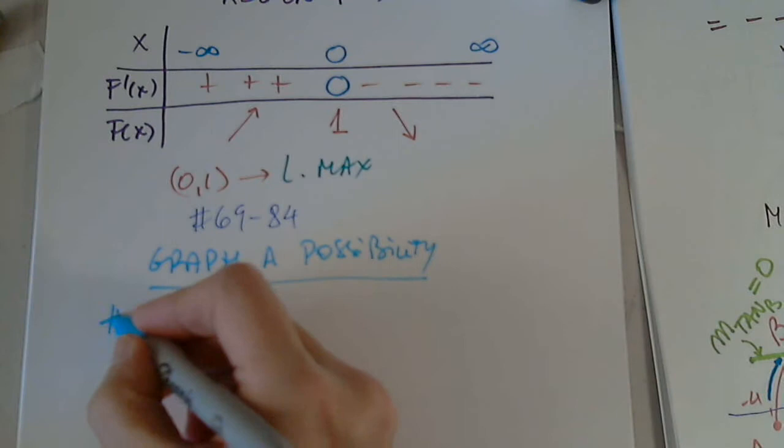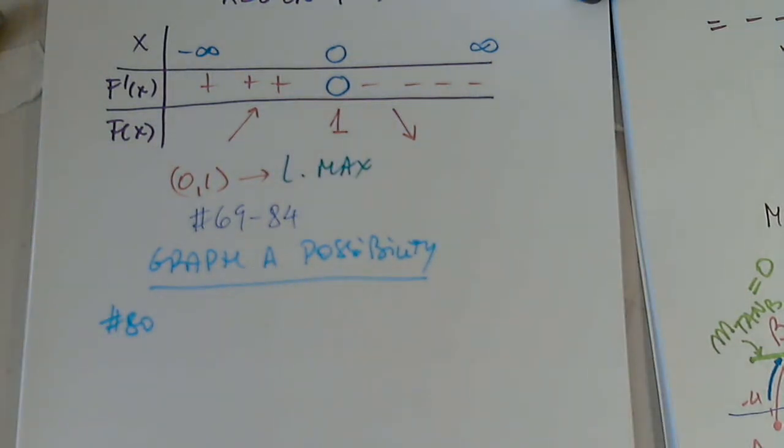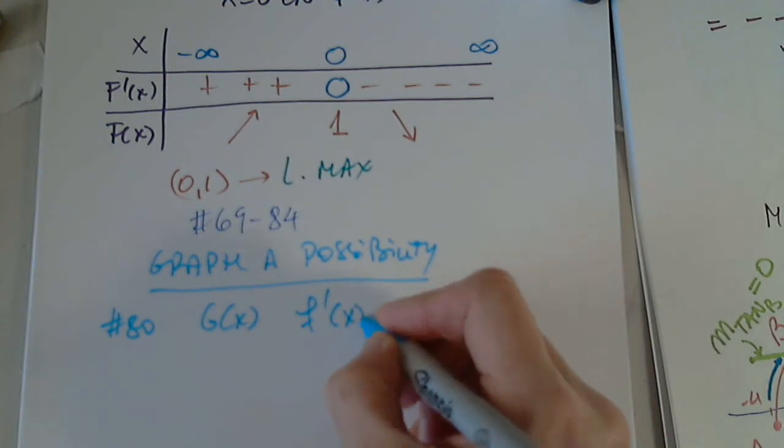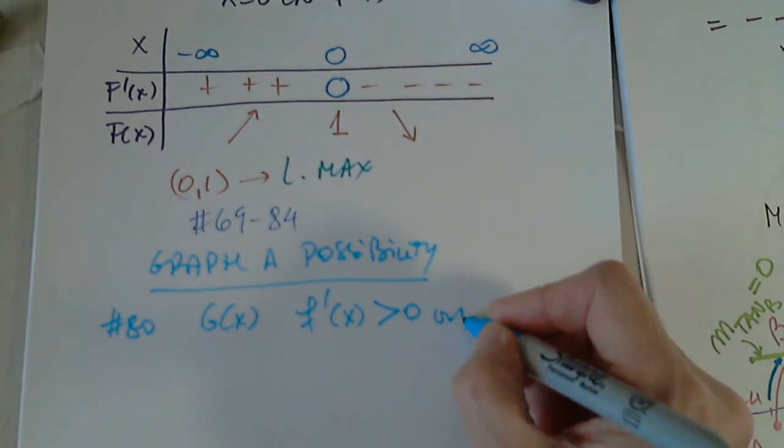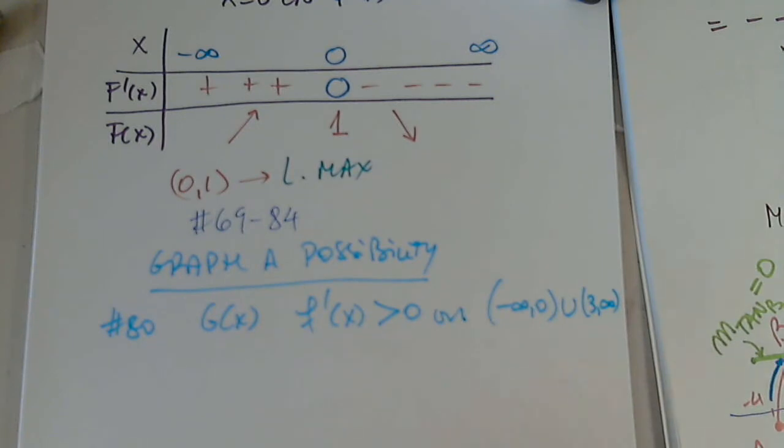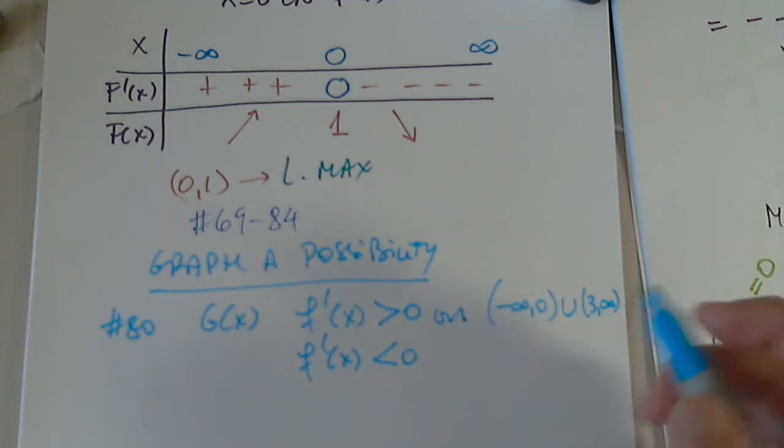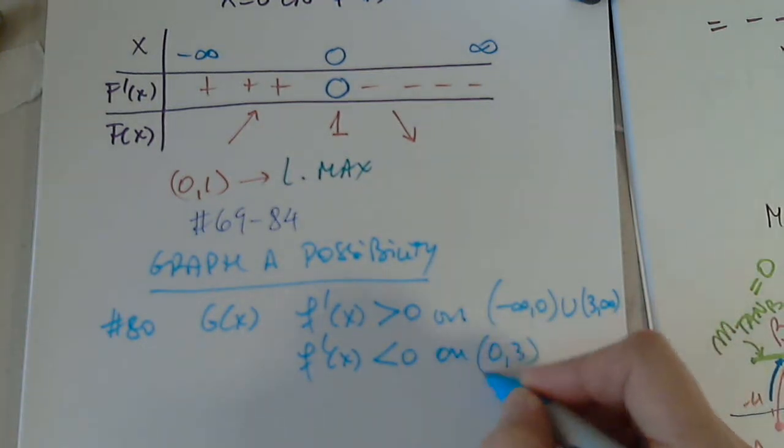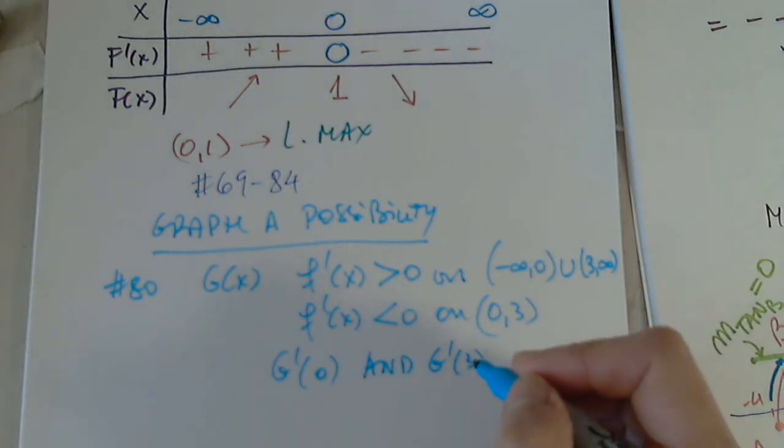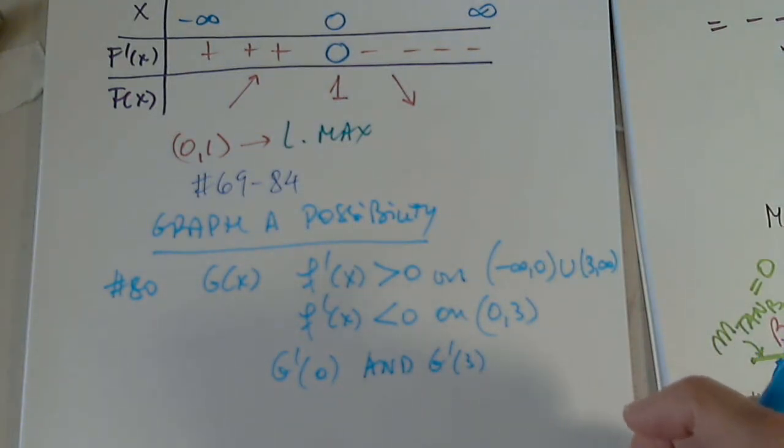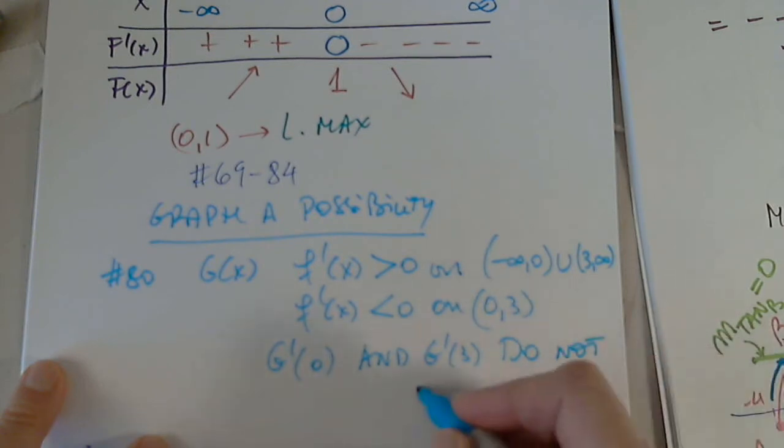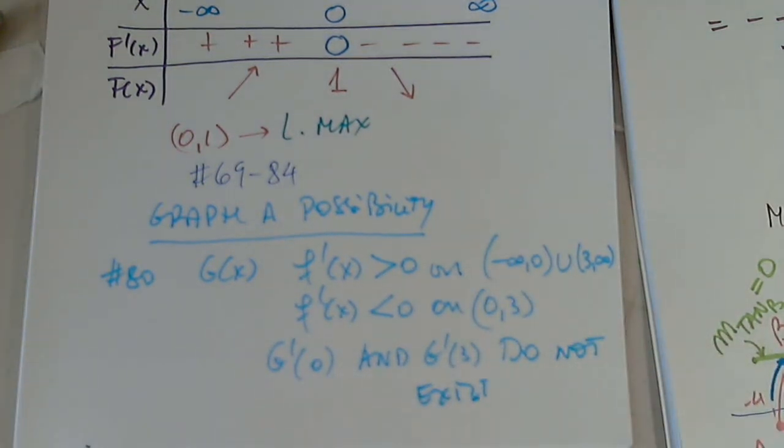I'm looking at 80 and you can choose the next one. So, in problem 80, they're giving us g(x), they say, has a positive derivative, g'(x) is positive, on (-∞,0) union (3,∞), negative on in between (0,3). But they say g'(0) and g'(3) do not exist. In other words, the function is not differentiable at 0.